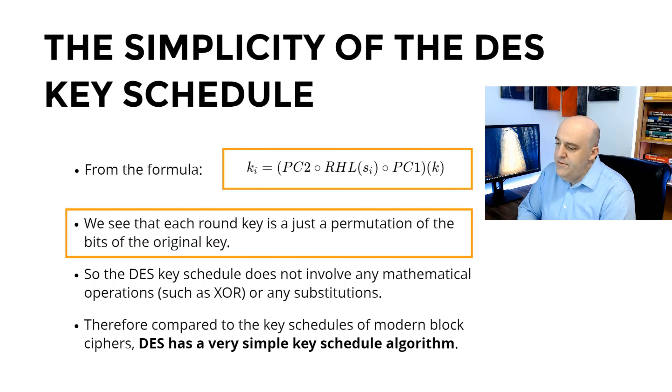Since the composition of P boxes is again a P box, we see that each round key is really just a single P box applied to the original key K. And so from this perspective, the DES key schedule is very simple compared to, for example, key schedules of modern block ciphers. Alright, so that ends this video. Thanks for watching.